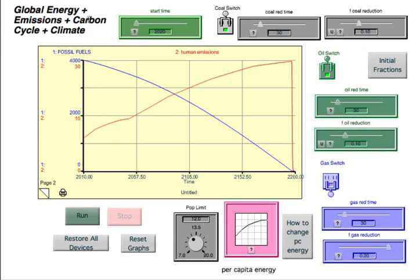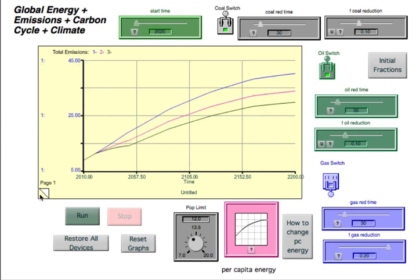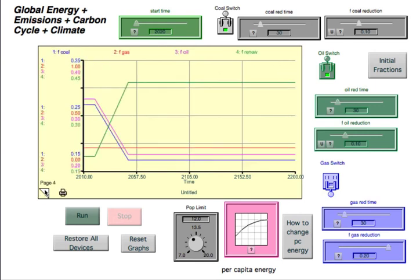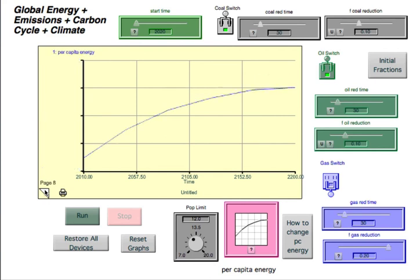Now this is connected to a global carbon cycle model. The fossil fuels is part of that. It's also connected to a climate model. And so if we were to click through all these different pages in the graph pad, you can see all these little parameters plotted here.